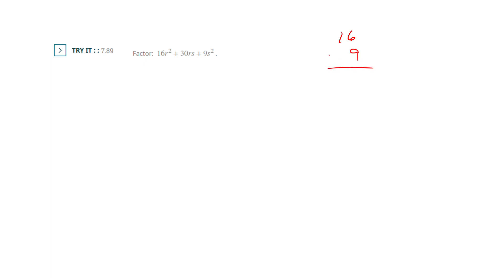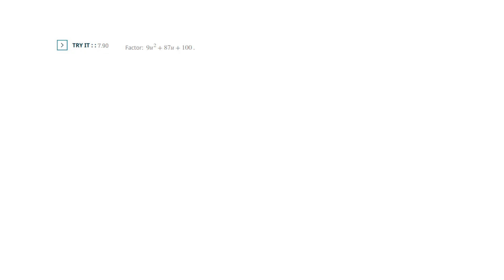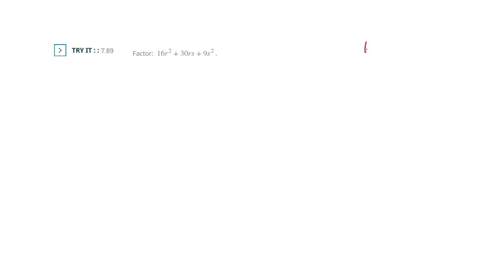What you're going to see here is that using the perfect square shortcut is not going to work — this is going to be a big AC one. I have the square roots on the front and back, but it's not going to make the middle. So we're doing 16 times 9 for the AC method, giving us 144, and we need two numbers that multiply to 144 and add to 30.